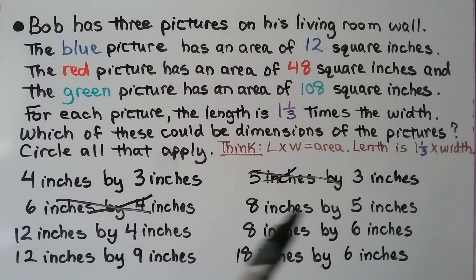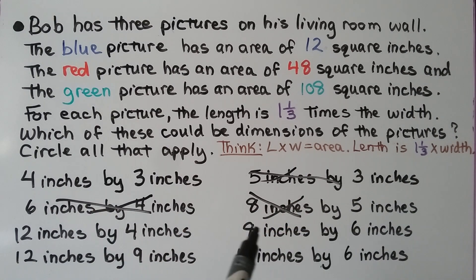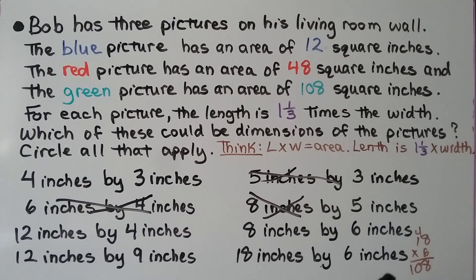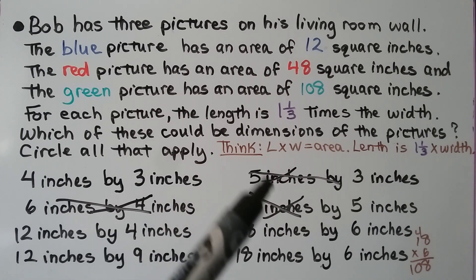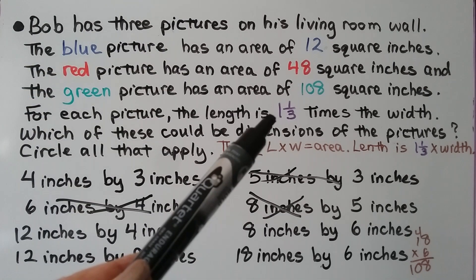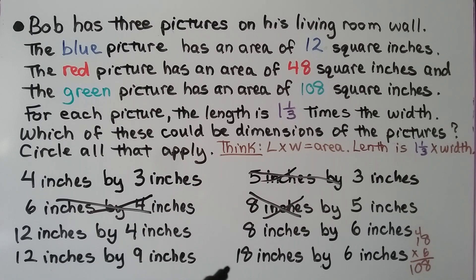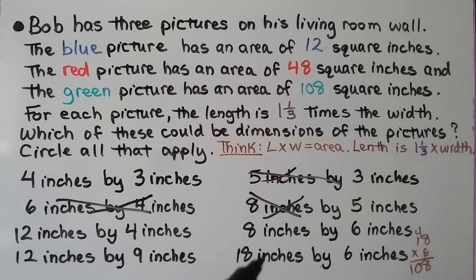Eight by six: eight times six is forty-eight, so it might be that one. Eighteen by six: eighteen times six is one-hundred-eight, so it might be that one too. So we've eliminated three options. Now we need to check that the length is one-and-one-third times the width. For eighteen by six: one-and-one-third more than six would be two more, making it eight. That would be a six by eight — so eighteen by six doesn't fit.